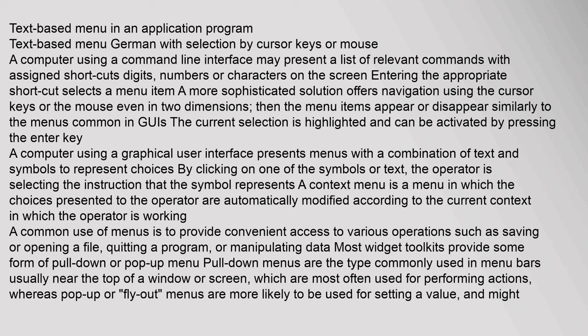A context menu is a menu in which the choices presented to the operator are automatically modified according to the current context in which the operator is working. A common use of menus is to provide convenient access to various operations such as saving or opening a file, quitting a program, or manipulating data.